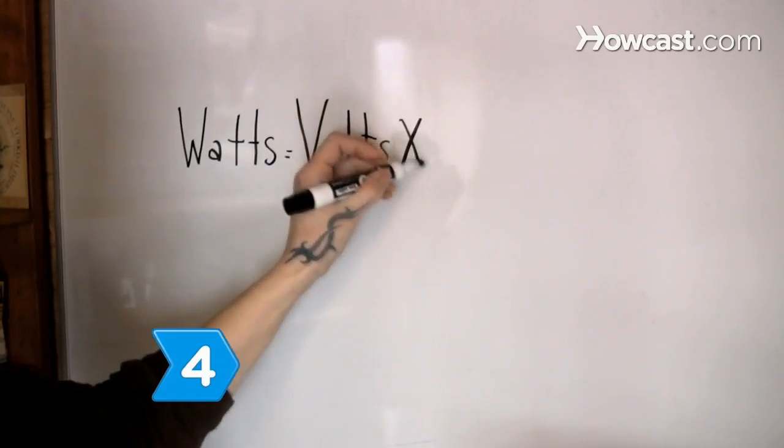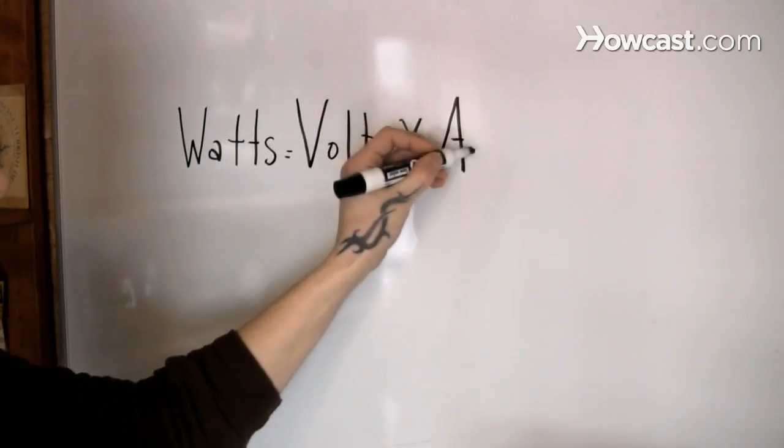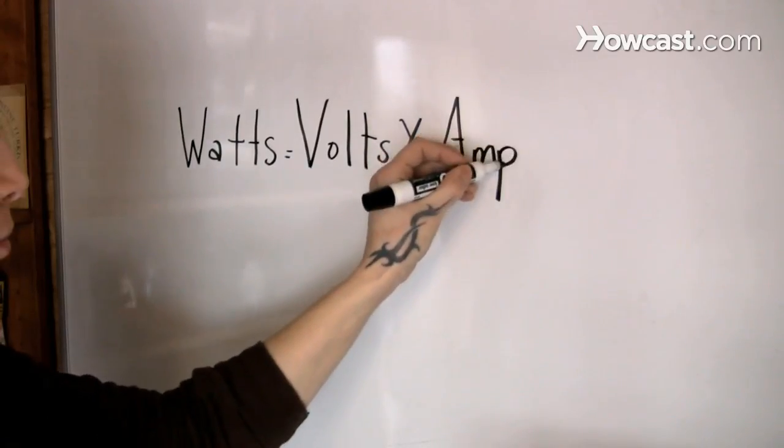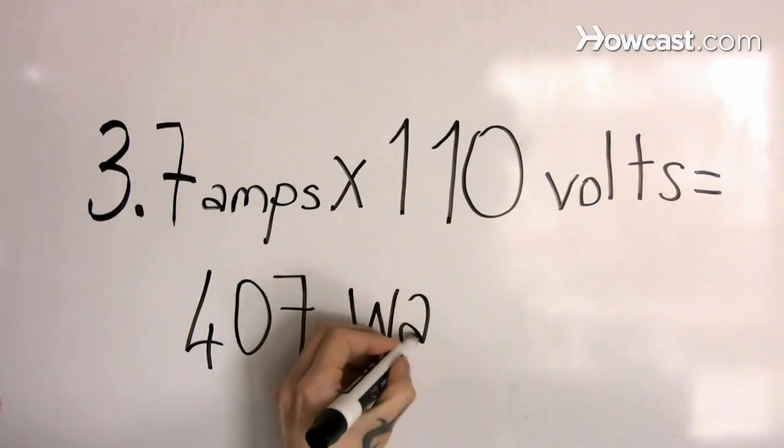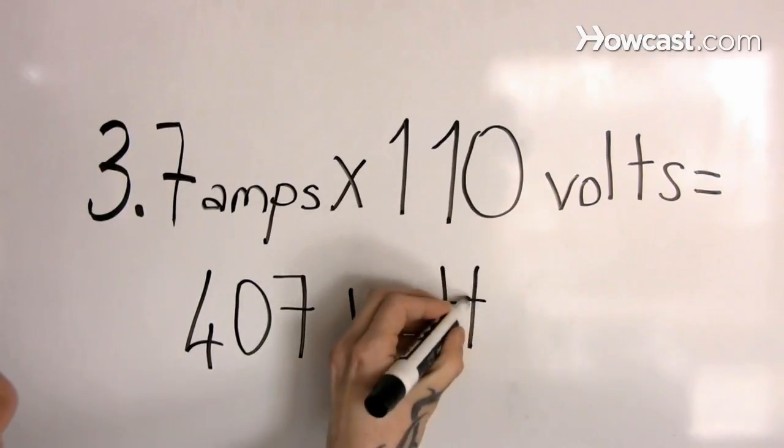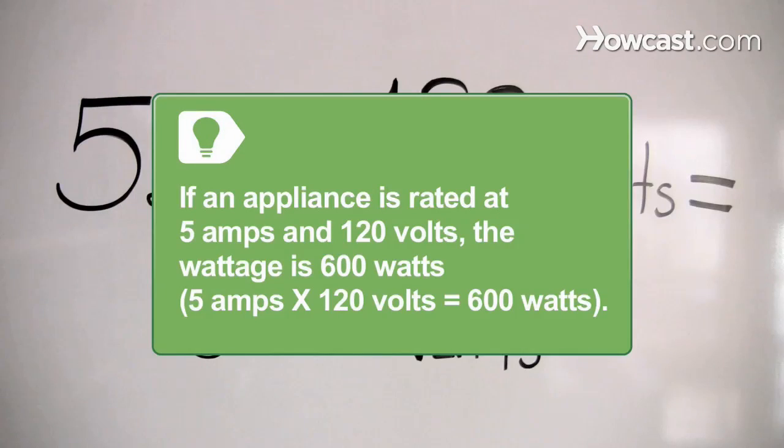Step 4. Calculate the wattage from the product of voltage and the current for the appliance. Voltage is measured in volts and current in amperes, or amps. If an appliance is rated at 5 amps and 120 volts, the wattage is 600 watts. 5 amps times 120 volts equals 600 watts.